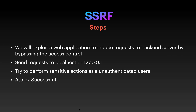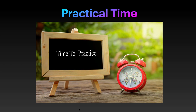So what are the steps to perform this SSRF attack on a target web application? I have listed four steps. First, we will exploit a web application to induce a request to the backend server by bypassing access control — basically sending a request via the loopback IP address to trick the web application into thinking the request is coming from the internal organization. Then we are going to perform sensitive actions as an unauthenticated user while the application believes us to be authenticated. Hence our attack will be successful.